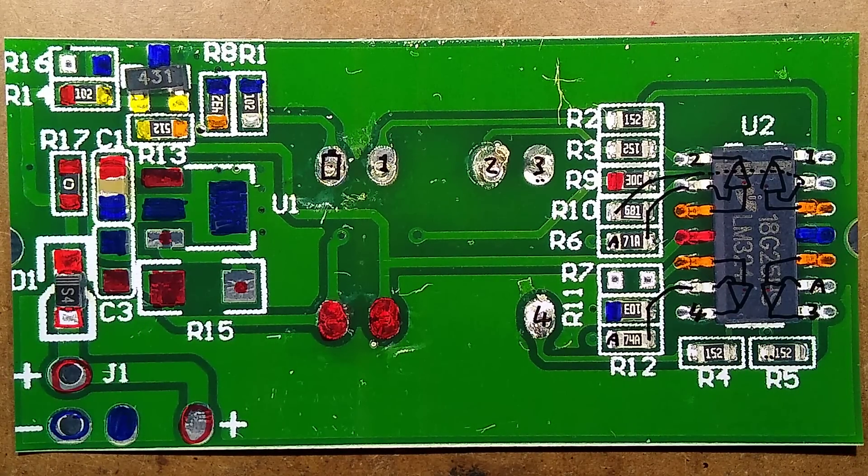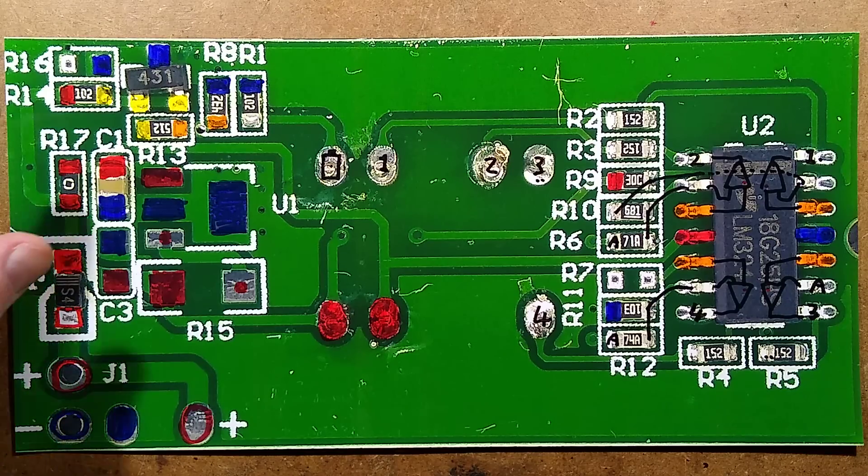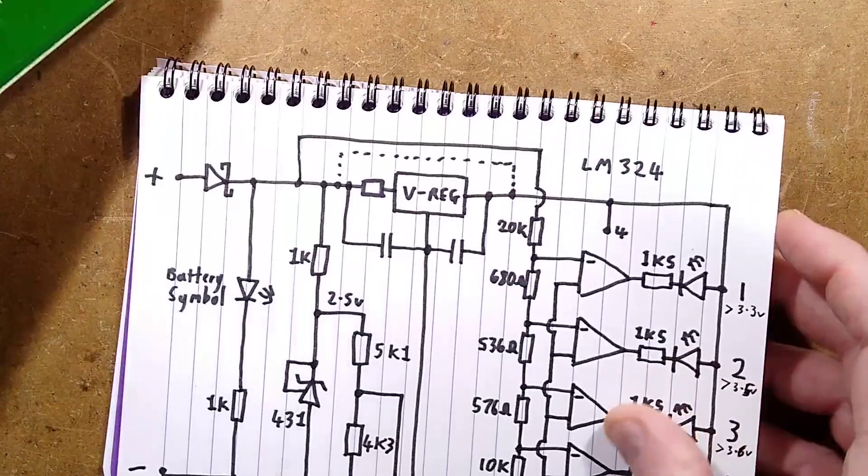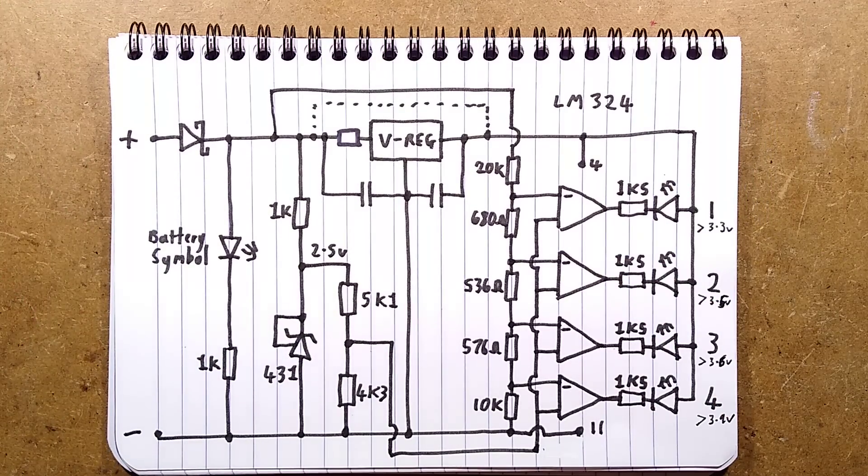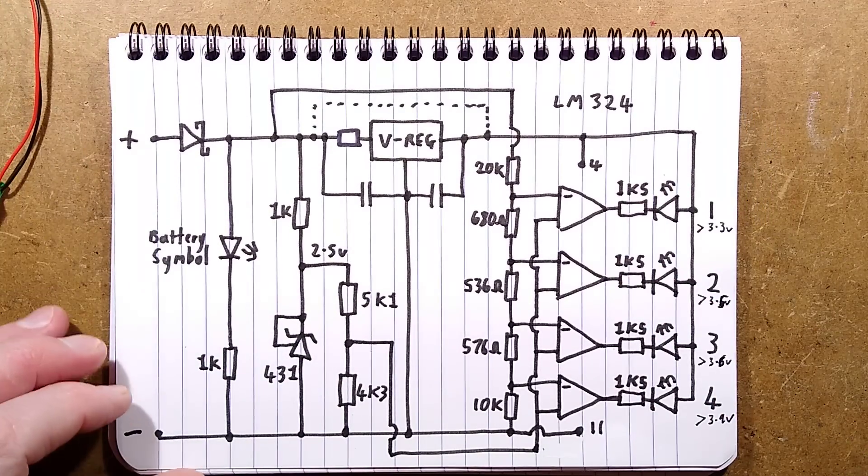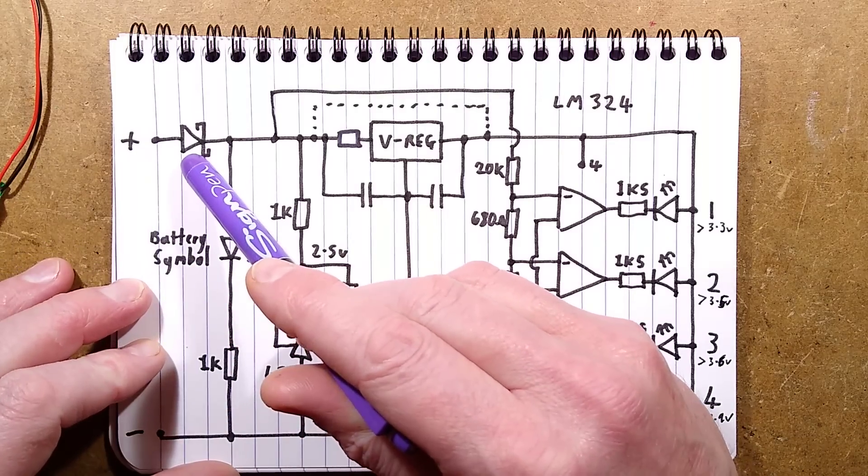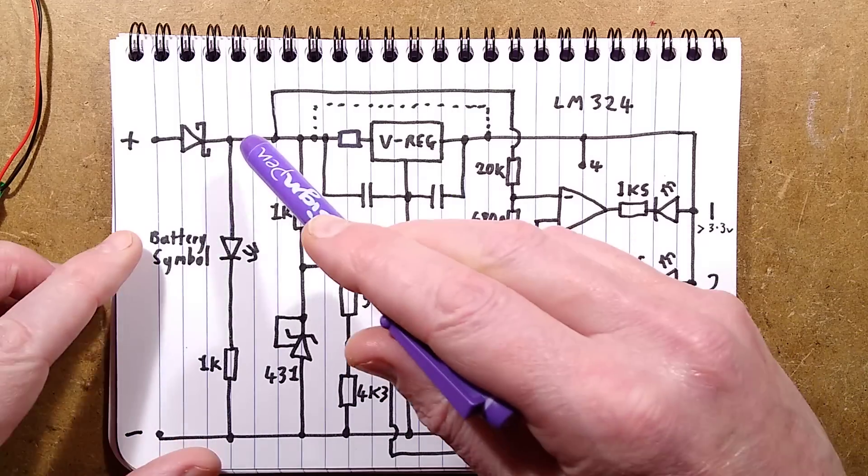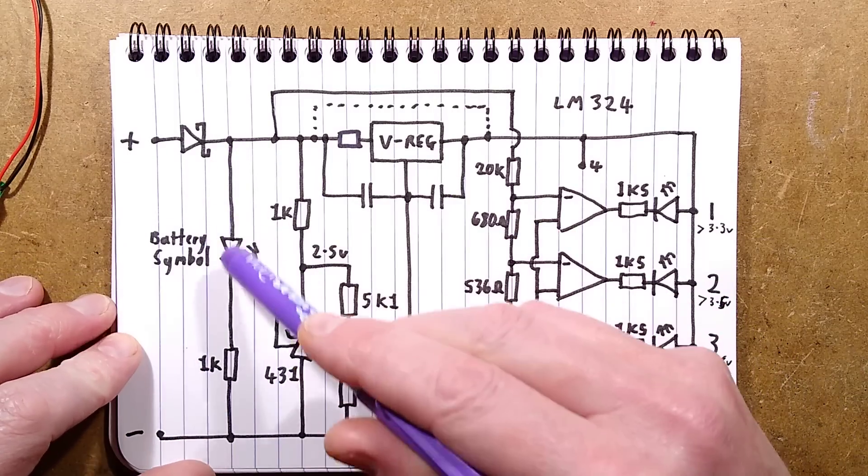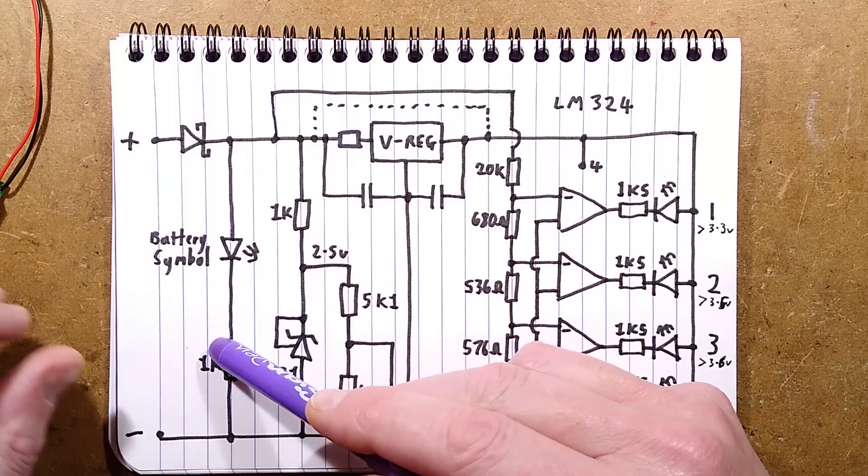Here's the schematic. The incoming supply goes through a Schottky diode for polarity protection. This is good, we like polarity protection.